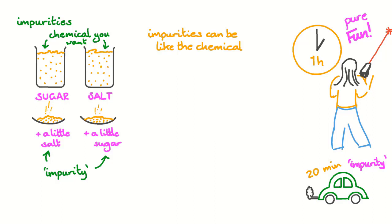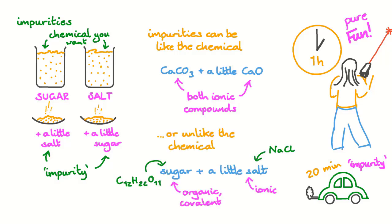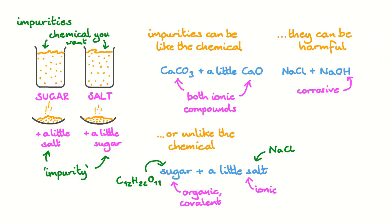Quite often, impurities are quite similar to the chemical we want. For instance, in powdered calcium carbonate, there might be a little calcium oxide. Both of these are ionic compounds that contain calcium and oxygen. Impurities could also have nothing to do with the chemical — when we have sugar and salt, we have two very different chemicals. One is an organic compound with covalent bonds between carbon, hydrogen and oxygen, and the other is an inorganic compound with bonds between sodium ions and chloride ions. Impurities can be harmful, so you could have corrosive sodium hydroxide mixed in with salt, or like a little salt in some sugar, they can be harmless. Ultimately, it comes down to the situation you're in and the nature of the impurity.